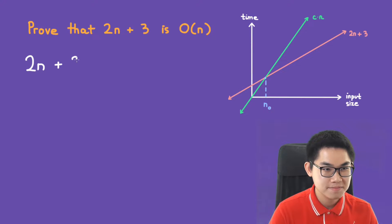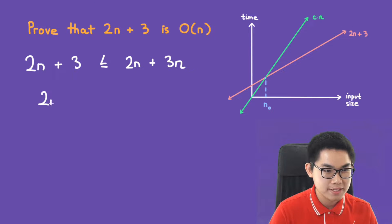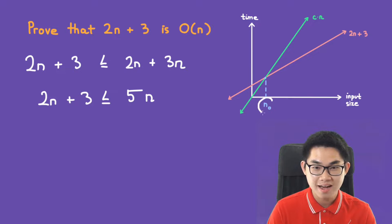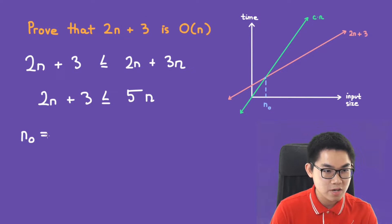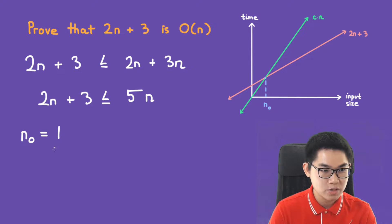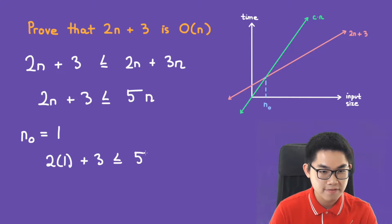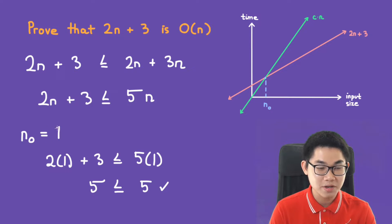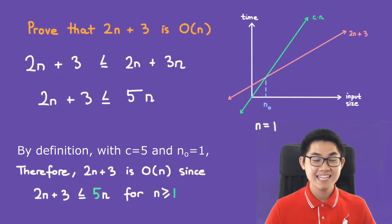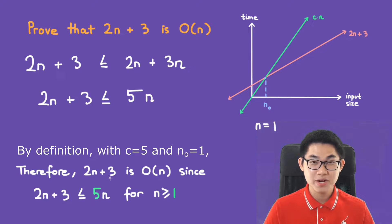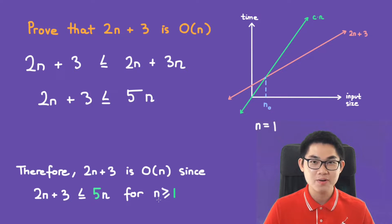We know that 2n plus 3 is less than 2n plus 3n, because 3 is less than 3n. So 2n plus 3 is less than 5n — our constant c is 5. For n naught, we try n naught equals 1: plugging in, 2 times 1 plus 3 is 5, which is less than 5 times 1, so 5 is less than or equal to 5. This is true, so n naught is 1. Therefore, 2n plus 3 is O(n) since 2n plus 3 is less than or equal to 5n for all n greater than or equal to 1.